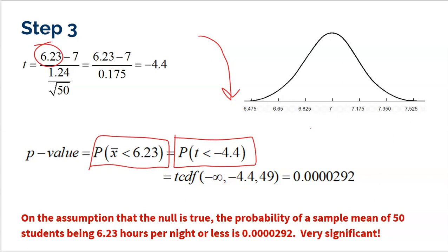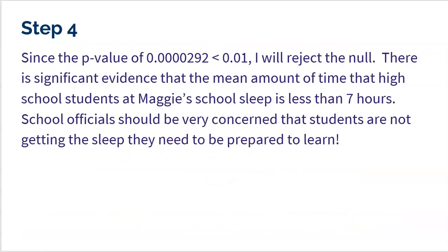But wait, it did happen. So the only conclusion I can make is that the 7 I put in the middle is wrong. So that is why, because my p-value is clearly less than 0.01, that was my alpha level that I used of 1%, I will reject the null. There is significant evidence that the mean amount of time that high school students at Maggie's school sleep is less than 7 hours.